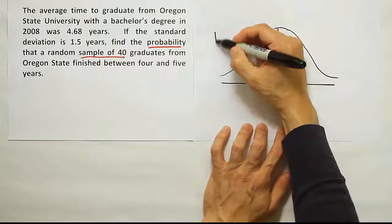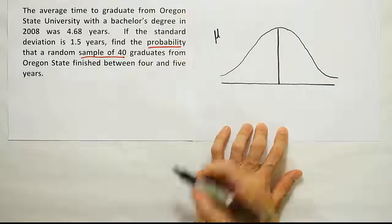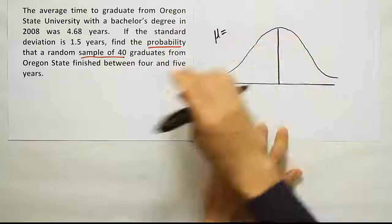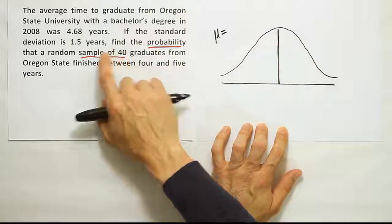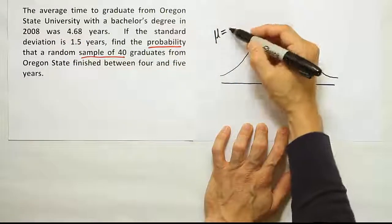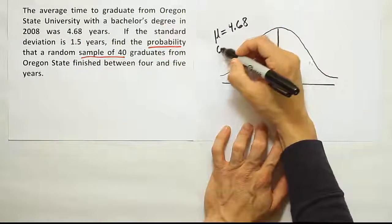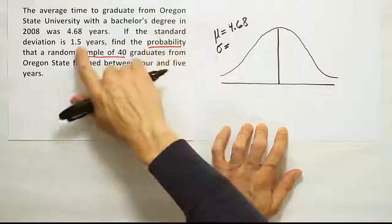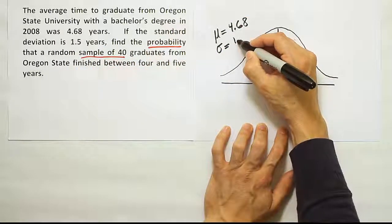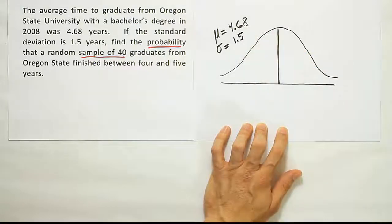According to the central limit theorem, the mean for x bar will be the same as the mean for the original data. So I'm going to go ahead and use the average they gave us. They said the average time was 4.68. And then they had a standard deviation. If the standard deviation is 1.5.